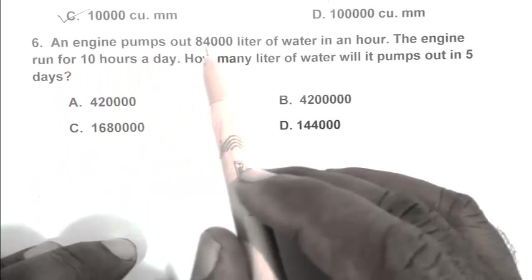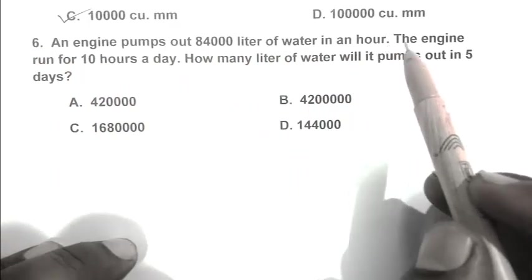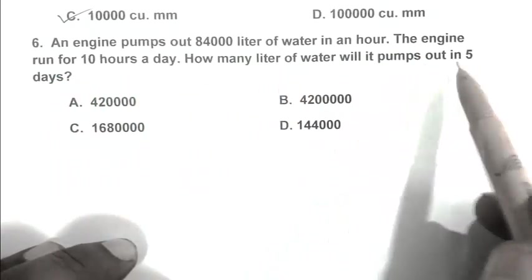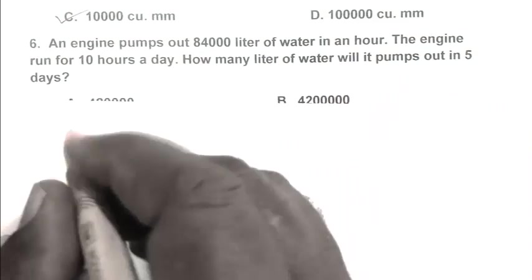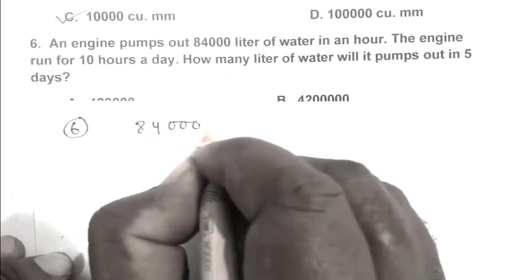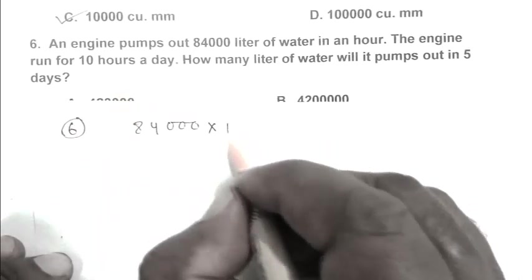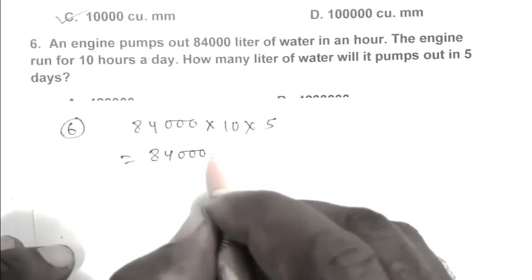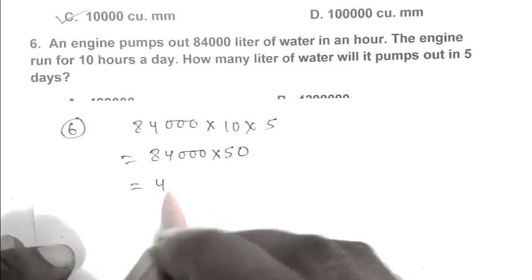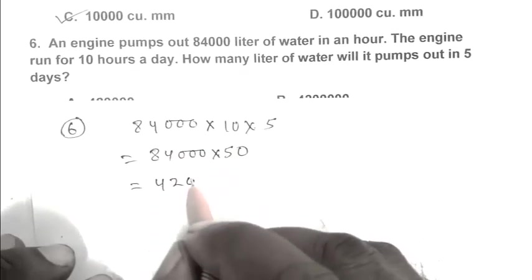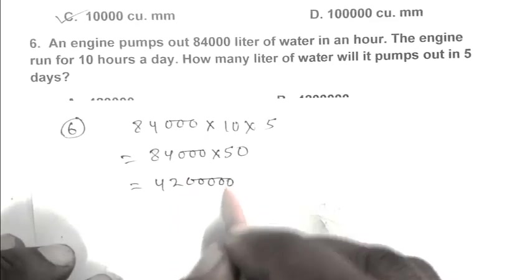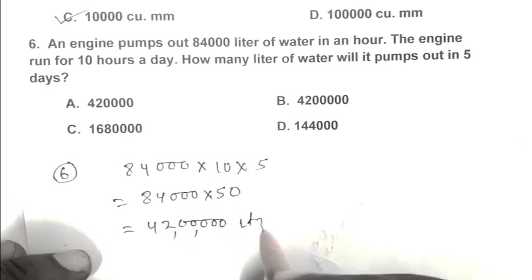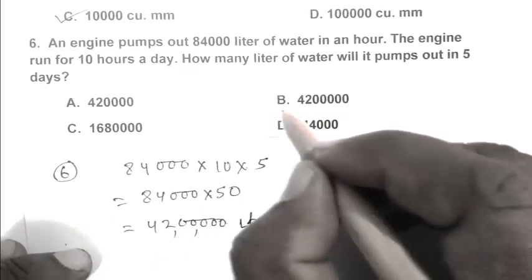Question number 6. An engine pumps out 84,000 liters of water in an hour. The engine runs for 10 hours a day. How many liters of water will it pump out in five days? So 84,000 times 10 times 5, that is 84,000 times 50, equals 4,200,000 liters. B is the right answer.